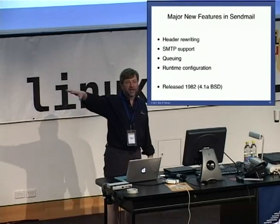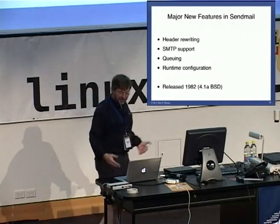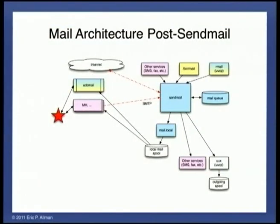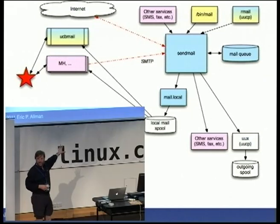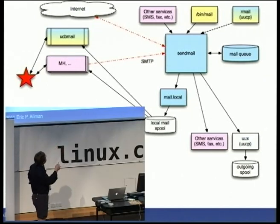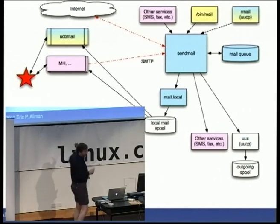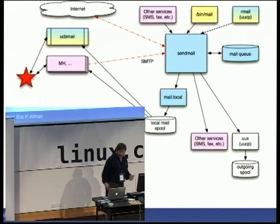SendMail came out in 1982 with 4.1A BSD, which was the very first version of BSD — or Unix for that matter — that had TCP/IP support in it. It had header rewriting so that it could normalize addresses to be appropriate for where the message was going. It had support for SMTP queuing. Amazing new innovation: runtime configuration. So here's the architecture post-SendMail. There's now starting to be more user interfaces out there — things like MH from RAND have come along. UCB mail is still there. There's other services now appearing: fax software and SMS gateways. And the internet — this is where the internet first appears, one little cloud up there — and the use of the SMTP protocol.